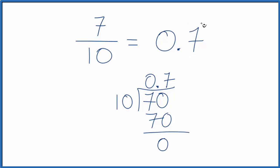You can check your work. Take this 0.7, your answer, and multiply it by the denominator, 10. 0.7 times 10 will give you the numerator, 7.